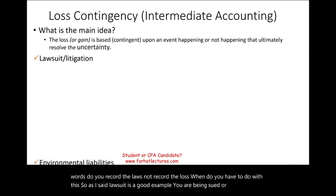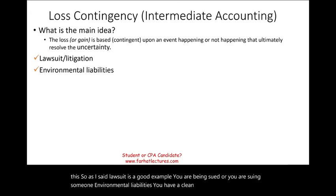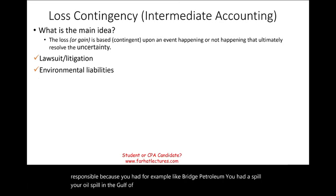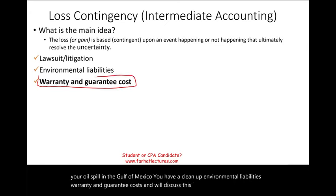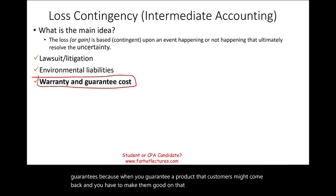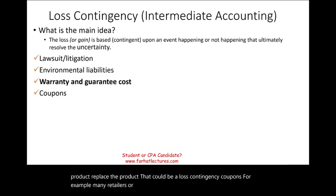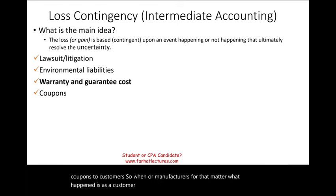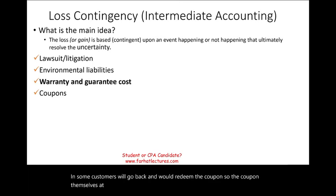You are being sued or you are suing someone. Environmental liabilities are another example — you have a cleanup to do. For example, like BP, you had an oil spill in the Gulf of Mexico, so you have environmental liabilities. Warranty and guarantee costs are also a loss contingency, which we'll discuss separately, because when you guarantee a product, customers might come back and you have to fix or replace it.